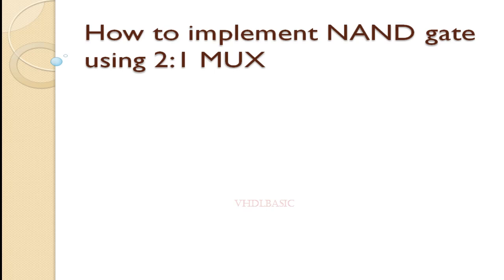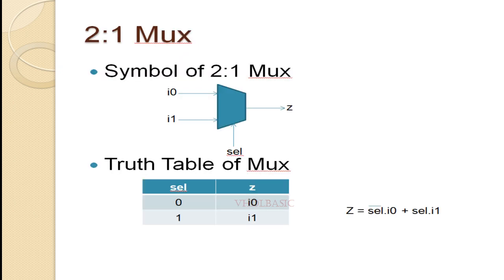Hi, hello, welcome to VHDL Basics. Today we are going to implement a NAND gate using a 2-to-1 MUX. As we all know, this is the 2-to-1 MUX symbol diagram where I0, I1, and Select are the inputs, and Z will be the output. If you refer to the truth table of MUX, whenever Select is 0, I0 will be assigned to Z; whenever Select is 1, I1 will be assigned to Z.